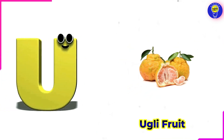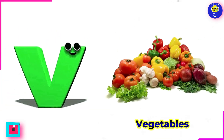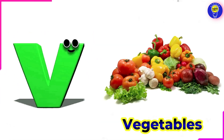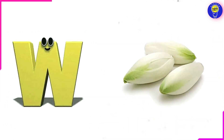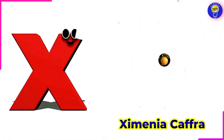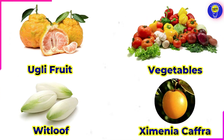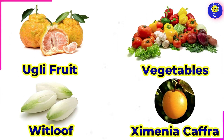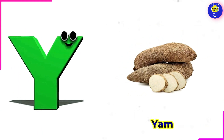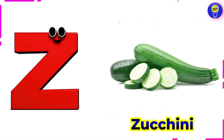U is for ugly fruit. V is for vegetables. W is for whitloaf. X is for ximenia. Y is for yam. Z is for zucchini.